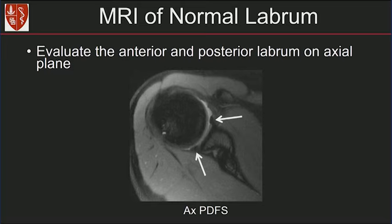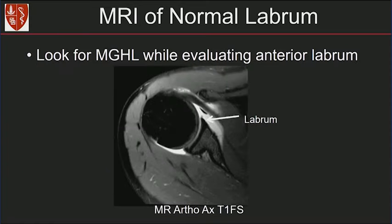The anterior and posterior labrum are evaluated on the axial plane. Here's the axial proton density fat-suppressed image. You can see normal anterior and posterior labrum, again homogeneously dark. Notice the smooth capsulolabral junction. When we evaluate the anterior labrum, we also look for the MGHL. When you follow the MGHL, the fibers should merge with the subscapularis.